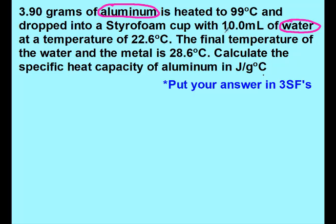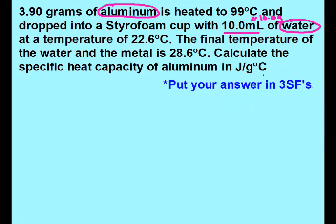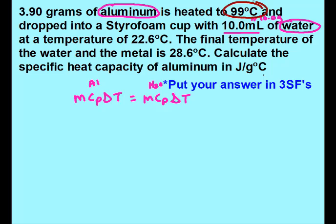The only tricky piece here is that they gave you the volume of water. Remember, one milliliter equals one gram for water because the density of water is 1 g/mL. So when it's water and they give you the volume, you can say that's how many grams you have. I write my equation, labeling one side as aluminum and one side as water so I don't accidentally plug information on the wrong side. The aluminum was starting at 99 degrees Celsius and the water started at 22.6, so aluminum is starting at a higher temperature and must be losing energy.